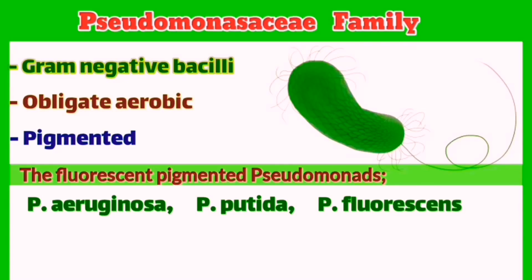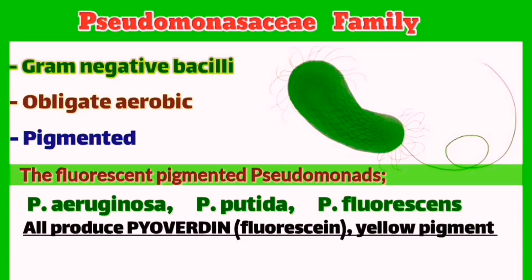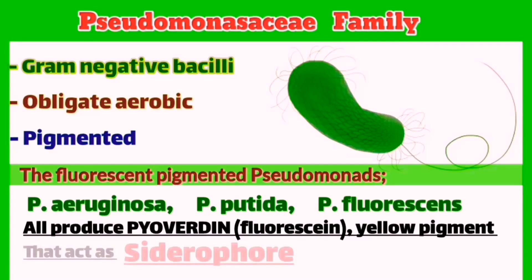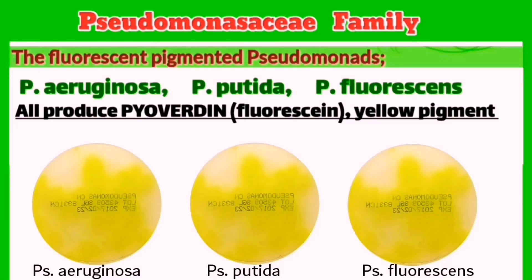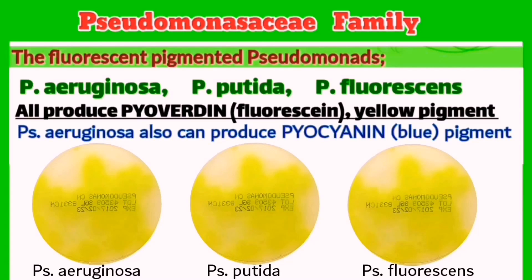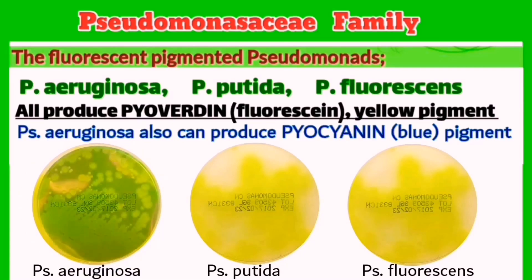These three species share the ability to produce a yellow pigment called pyoverdine. Besides this, Pseudomonas aeruginosa is the only species that can also produce a blue pigment called pyocyanin, which leads to a unique production of fluorescent green colonies due to the combination of the yellow and blue pigments.